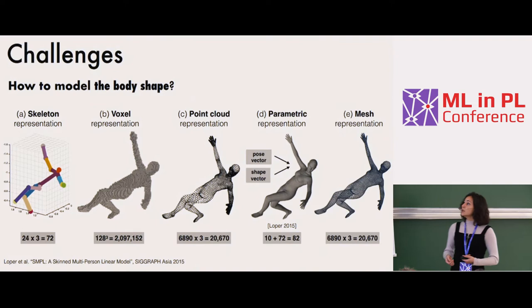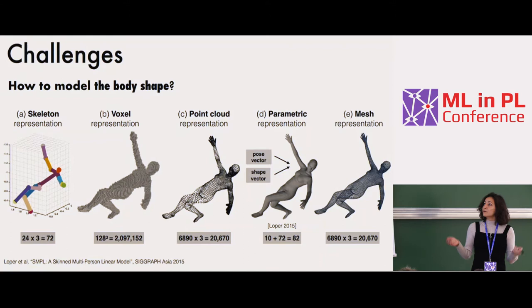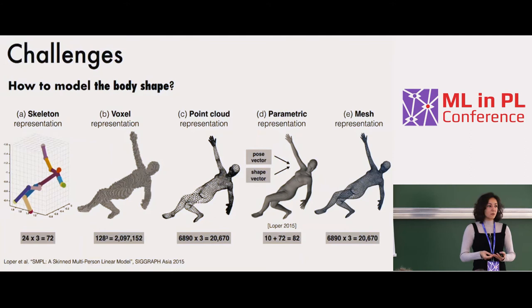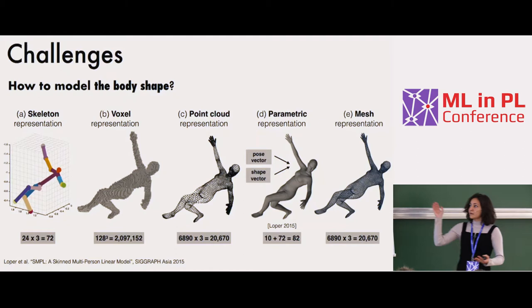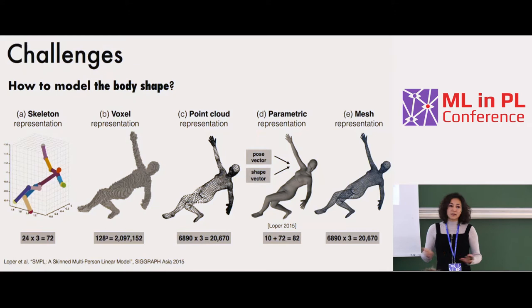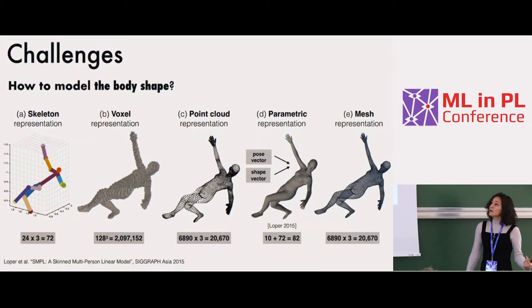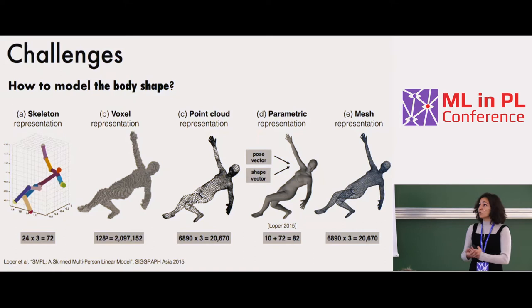Before going into what I'm working on, let me introduce a few challenges and why this is difficult. We have a pretty good consensus on how to represent some data — images are a grid of pixels — but for humans we still don't have a consensus on how to represent human bodies to computers. From left to right, these are increasingly recent representations. The skeleton is the most basic but quite efficient way — some points on the joints, which could be in 2D or 3D.